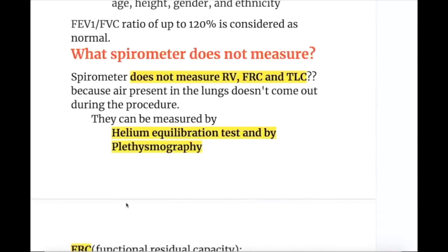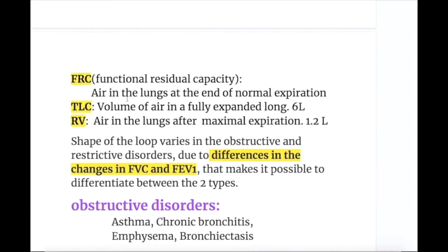A spirometer does not measure residual volume, functional residual capacity, or total lung capacity, because the air present in the lungs does not come out during the spirometric procedure. These can be measured by the helium equilibration test and by plethysmography. Functional residual capacity (FRC) is the air in the lung at the end of normal expiration.